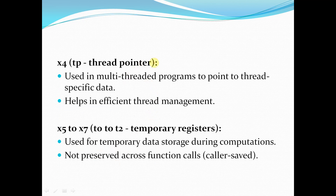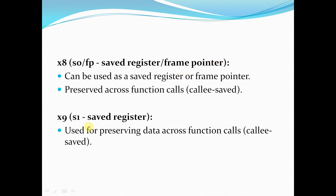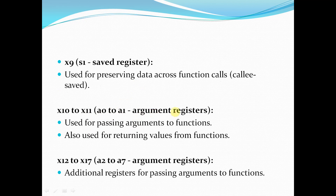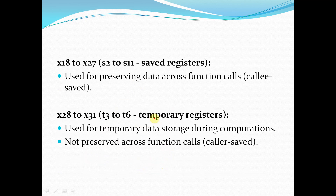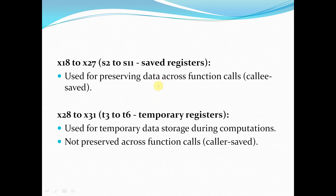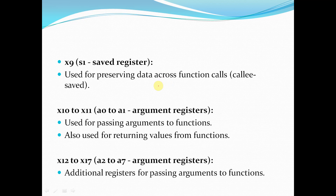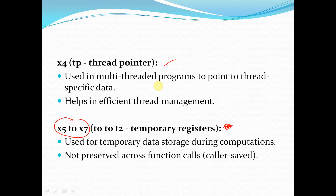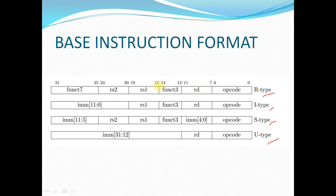X1 is used as the return address, X2 as the stack pointer, X3 as the global pointer, X4 as the thread pointer, X5 to X7 as temporary registers, X8 as a saved register or frame pointer, X9 as a saved register, X10 to X11 as argument registers, and X12 to X17 as additional argument registers. There is no strict compulsion to use registers this way — it is a standard convention, and specific functionality can be assigned as needed.